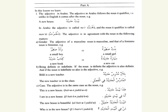Adjectives also need to agree by being definite or indefinite. If the noun is definite, the adjective is also definite. If the noun is indefinite, the adjective is indefinite. For example, Bilallun Mudarrisun Jadidun. Or El-Mudarrisu El-Jadidu Fil-Fasli. In the first example, Mudarris is indefinite, so the adjective Jadid is also indefinite. In the second example, El-Mudarrisu is definite, and the adjective that describes it, El-Jadidu, is also definite.